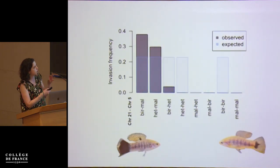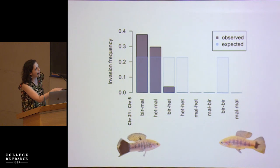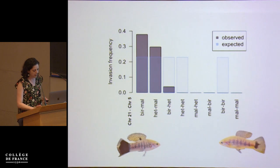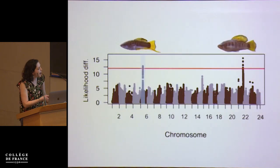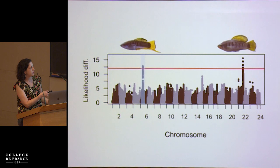Looking at the detailed breakdown, individuals that have melanoma all have birchmanii ancestry at chromosome 21 as well as malinche ancestry on chromosome 5. Strikingly, just a single birchmanii allele at chromosome 5 seems to be somewhat protective against this invasion phenotype — something we're excited to follow up on. We got really lucky with this mapping because this happens to be in a very high recombination rate region of the genome, and it only contained two genes.